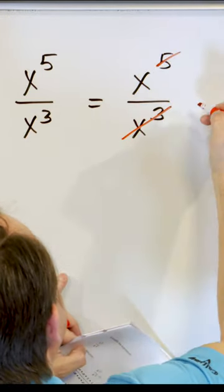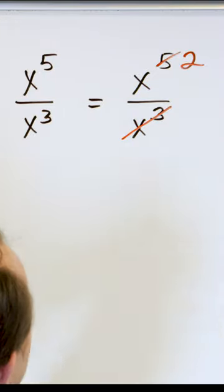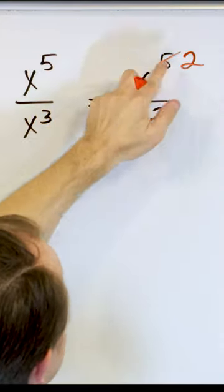Three x's will cancel with three on the top, revealing two left over. You see what I'm doing? I'm just subtracting five minus three and I'm getting two. That's what I'm doing.